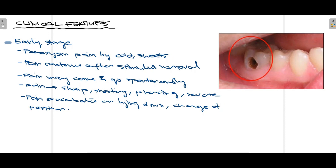These are the descriptive terms patients use to describe their pain. In most cases the pain exacerbates when the patient is lying down, especially during sleep and with change of position — when the person is sleeping, blood flow in the pulp vessels increases, so the pain of irreversible pulpitis increases. As you can see in this picture, there is a large cavity present, and a radiograph is needed to confirm irreversible pulpitis. These features may or may not all be present, but most of them typically are.